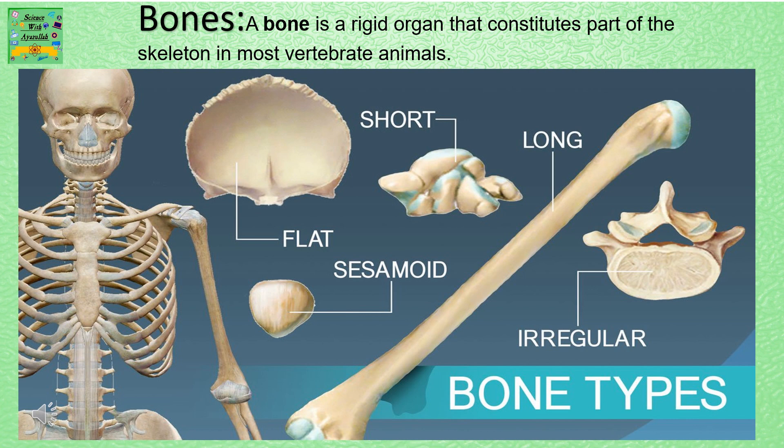Bones. A bone is a rigid organ that constitutes part of the skeleton in most vertebrate animals. There are many types of bones: flat bone, sesamoid bone, short bone, long bone, and irregular bone.